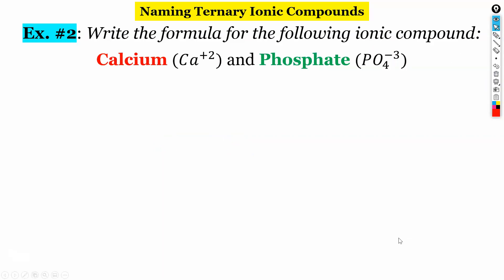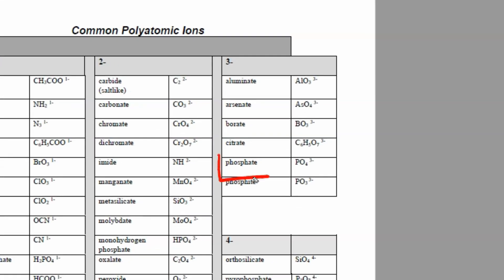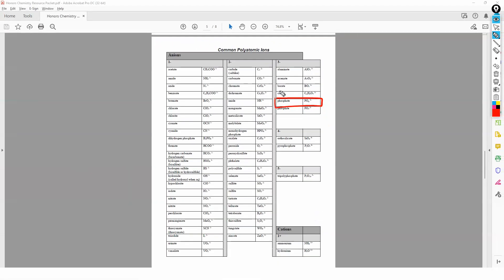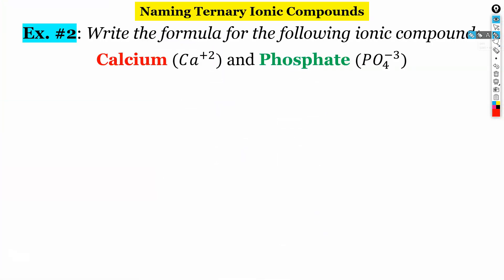Let's take a look at another example. Here's calcium and phosphate. So if we go to our table of polyatomic ions, phosphate is right here. Okay, so just like before, we have plus two, minus three. I can't multiply two and have it turn into three. I can't multiply three and have it turn into two. So we're going to need our least common multiple here.